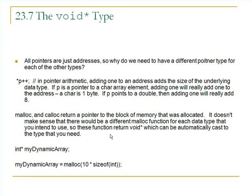It doesn't make sense that there would be a different malloc function for each data type you intend to use. So these functions return a data type called void pointer. A void pointer can be automatically cast to the type that you need. For example, where we allocated 40 bytes of space, the function returns a void pointer, but the variable's data type is an int pointer — and that's okay, because newer versions of C allow void pointers to be automatically upcast to int pointers. So this gives us a pointer to the block of memory that was allocated.